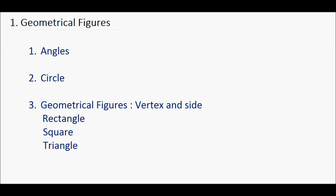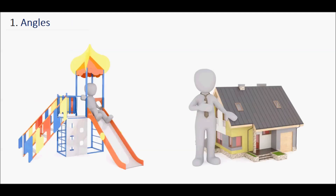Hello friends. In the first chapter, Geometrical Figures, we will learn basically three things: angles, circle, and vertex and sides of geometrical figures like rectangle, square, and triangle. So let's start with angles.